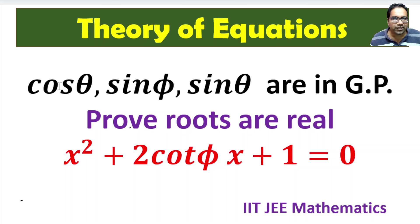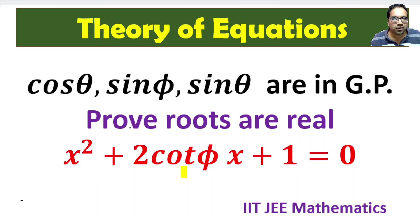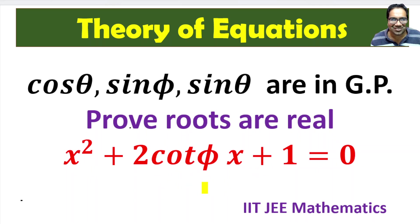Here is a nice problem. We are given cos θ, sin φ, and sin θ in geometric progression. Then we have to prove the roots are real for the quadratic equation x² + 2cot φ · x + 1 = 0. Note that in this equation there is no θ — there is only φ — but we still have to prove that the roots are real for this quadratic equation.